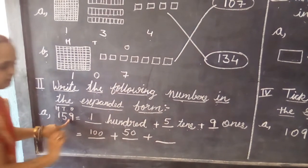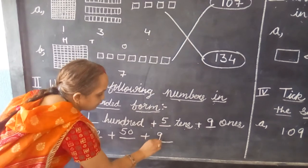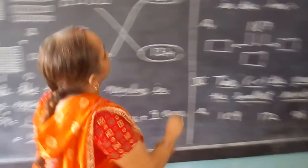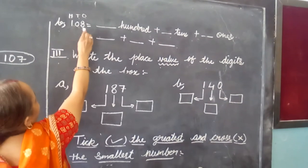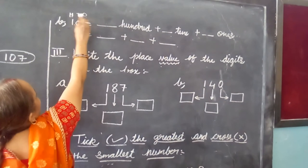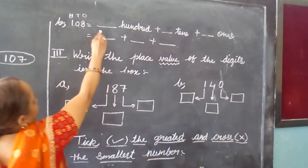And 9 ones is 9, so we are going to write here 9. Now let us see one more example. So here we are going to write question B. The number given is 108. We will write here 1, 0, and 8. Now read the next sentence.